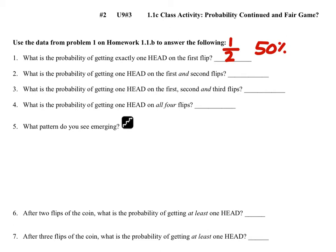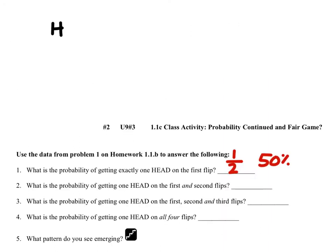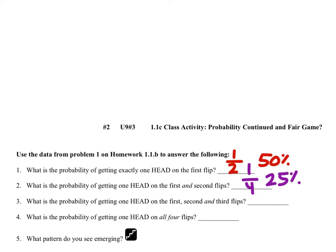The second question asks for the probability of getting heads on both the first and second flips. On the first flip you could get heads and then heads again, or heads then tails, or tails then heads, or tails then tails. So there are four possible outcomes and only one has heads on both flips — that's one-fourth, or 25%.